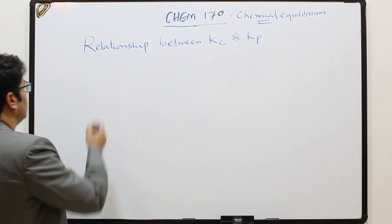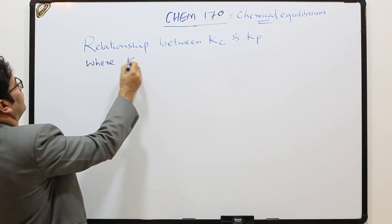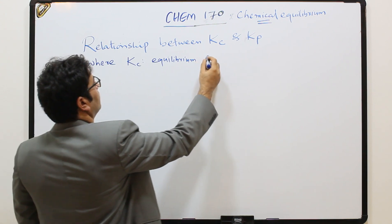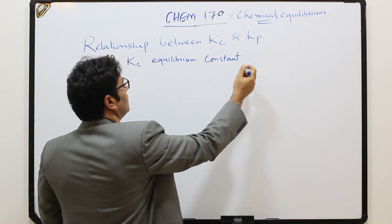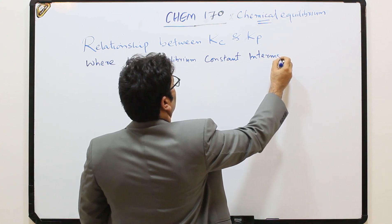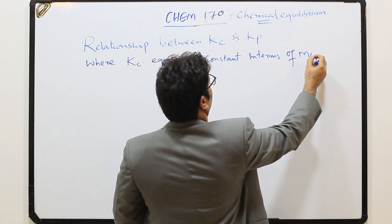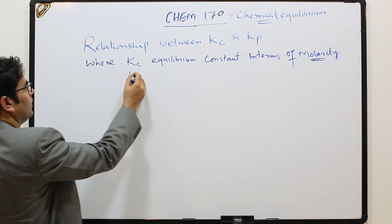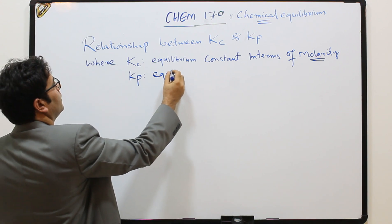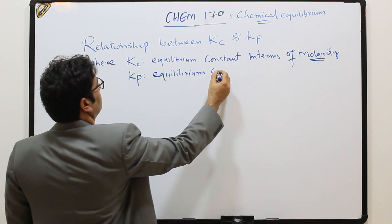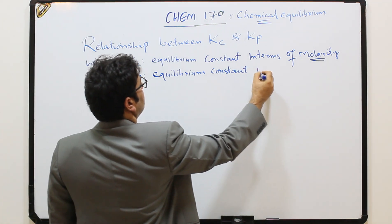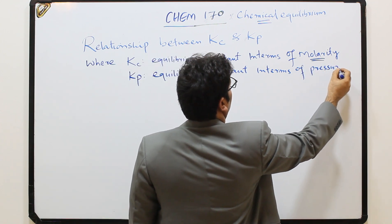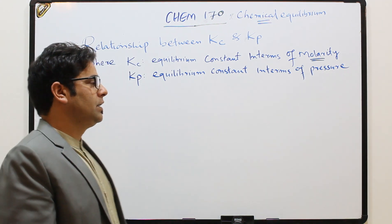What is Kc? Kc is the equilibrium constant in terms of molarity — it means concentration. While Kp is the equilibrium constant in terms of pressure — specifically partial pressure, measured in Pascals, or molarity in moles per liter.